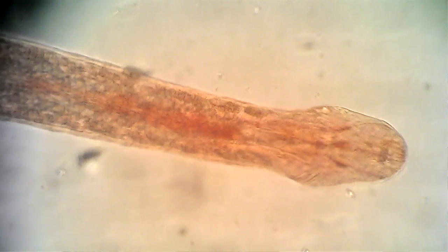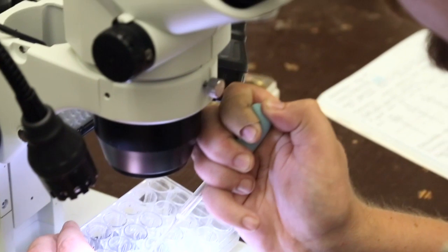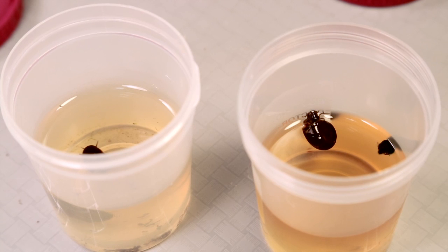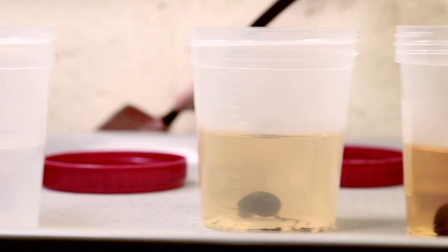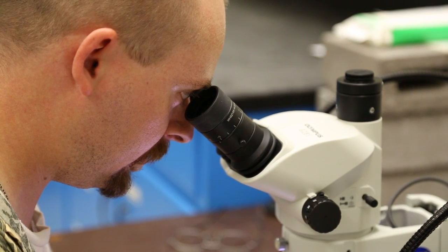The reason why we can use a muskrat parasite to study a human disease or an agricultural disease is because all flukes, by definition, have to infect a snail first. So they infect a snail first, and then they go on and infect other things. We can't really see what a parasite does inside of its host.